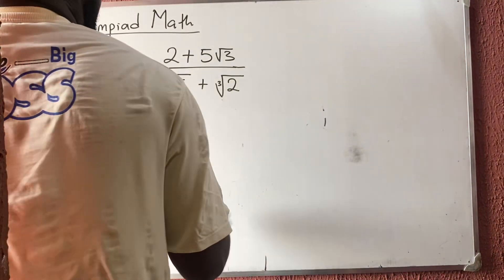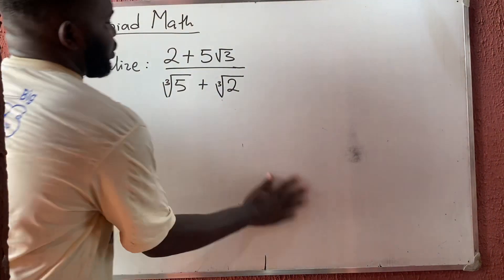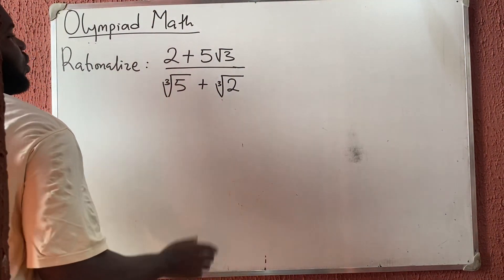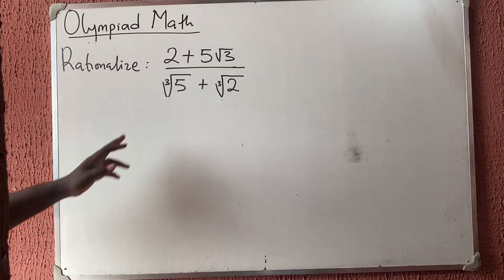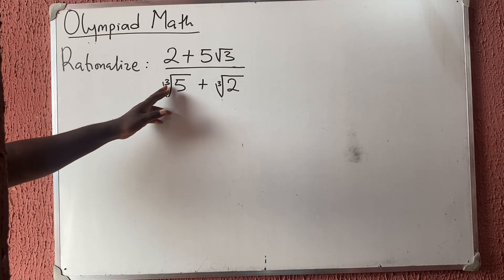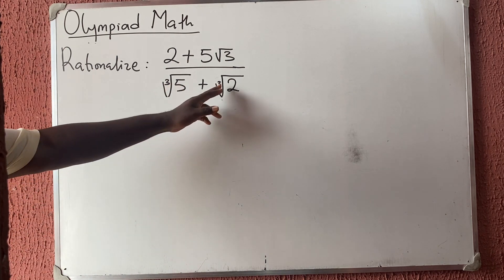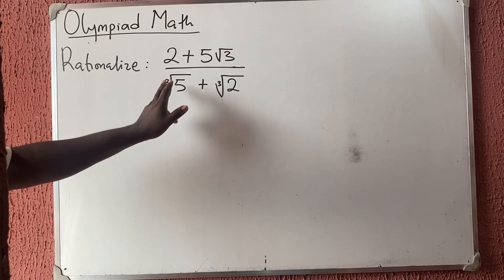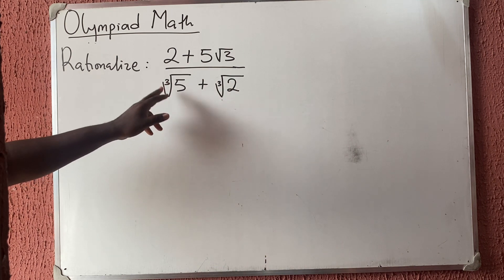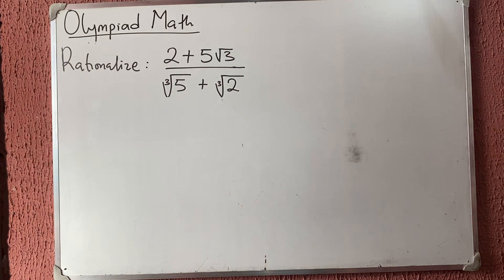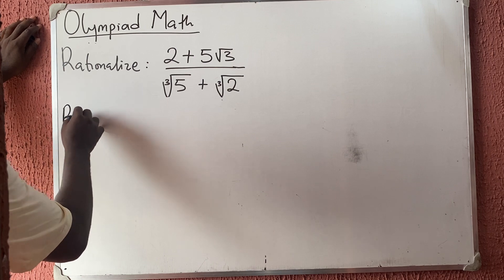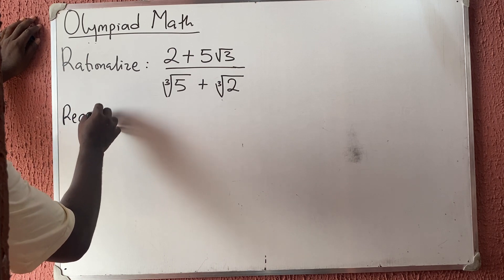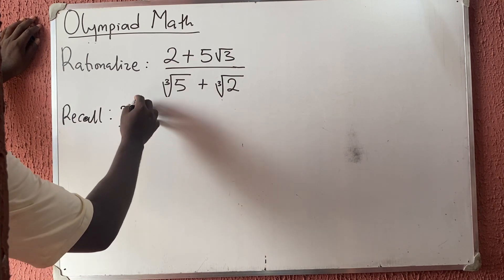Let us quickly solve this olympiad problem. We are asked to rationalize this expression. This is very simple. Don't forget that this is a cube root — not a square root. Whenever it is a cube root, you should recall that...